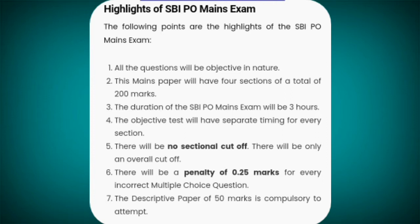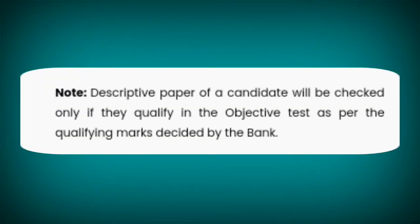6. There will be a penalty of 0.25 marks for every incorrect multiple choice question. 7. The descriptive paper of 50 marks is compulsory to attempt. Note: the descriptive paper of a candidate will be checked only if they qualify in the objective test as per the qualifying marks decided by the bank.